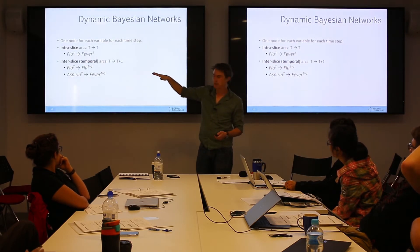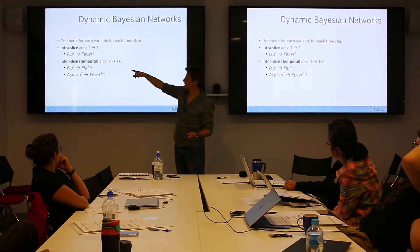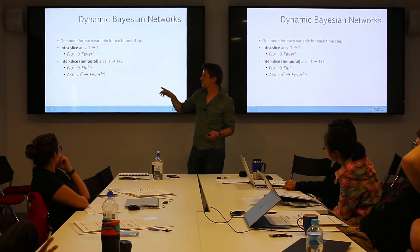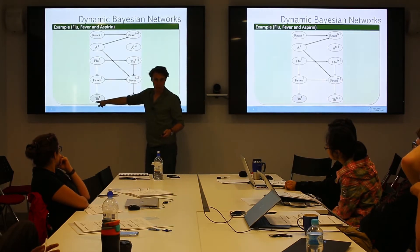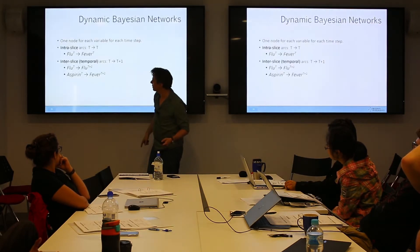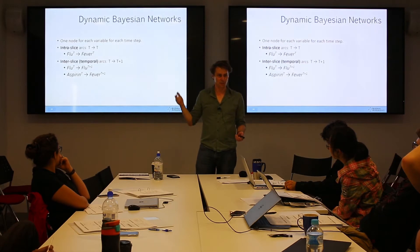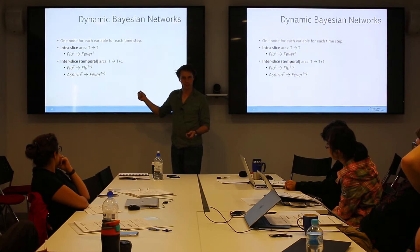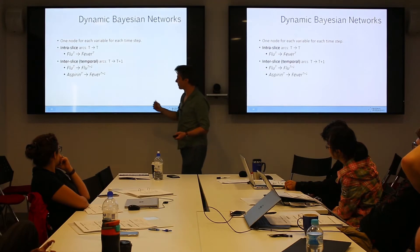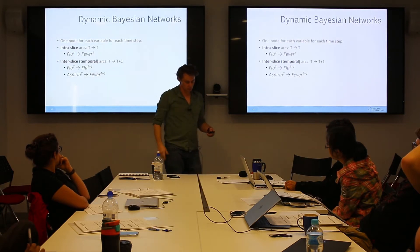In terms of terminology: we have one node for each variable for each time step. There are intra-slice links — links within a time slice, such as flu to fever and fever to thermometer — and inter-slice links, which go from, say, flu at time t to flu at time t+1. If you're writing papers on dynamic Bayesian networks, this terminology is useful. Ann Nicholson did her PhD on dynamic Bayesian networks, so she'd be a good person to talk to if you're keen on this.